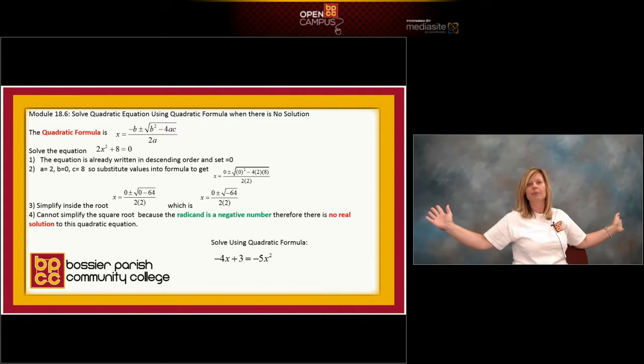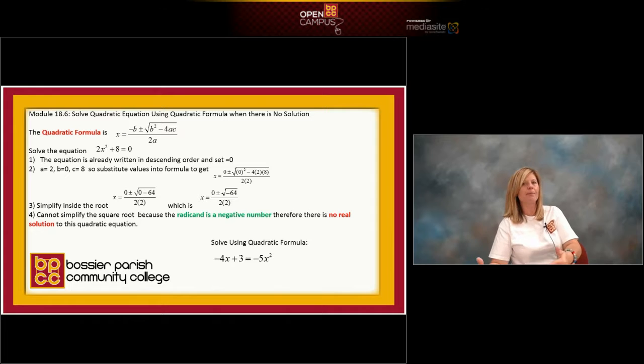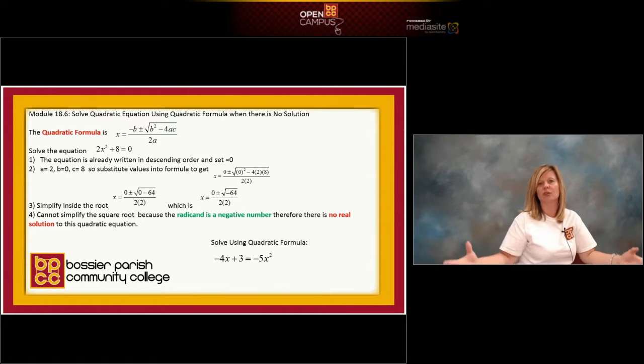Because I know my next step is to do the square root. But underneath the square root is negative sixty-four. And I have the knowledge to know I cannot square root a negative number. There is no number times itself that makes negative sixty-four. So if I can't work the square root part of the formula, I'm done. I can't finish the calculation.